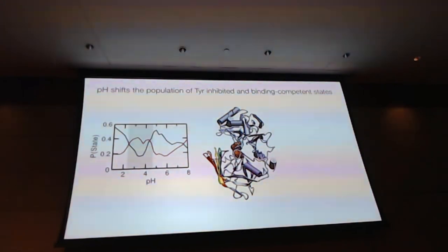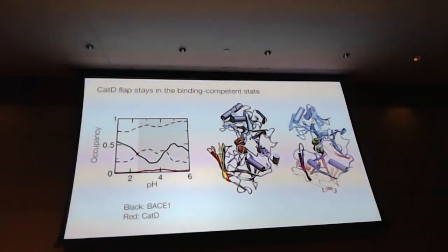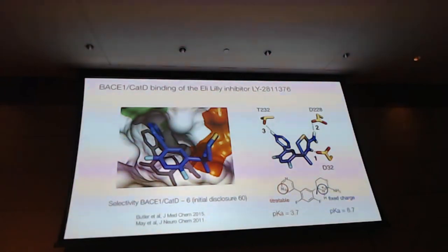Now let's bring on the off-target cathepsin D, which is very similar in structure. They are like twins. You cannot distinguish them. But if you look at the dynamics, it turns out this flap is rigid. And now shown here in dashed lines. So it's always in the flap positions, always in the binding competent state. How wonderful. All right. So let's look at their binding mode with the inhibitor Lilly compound.